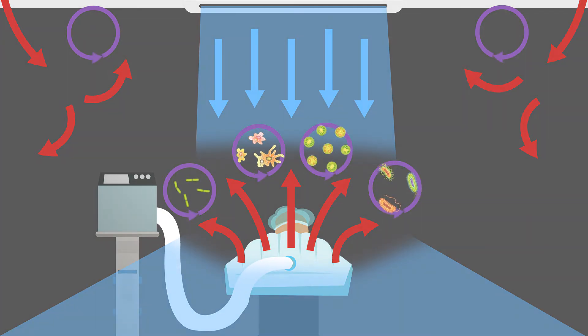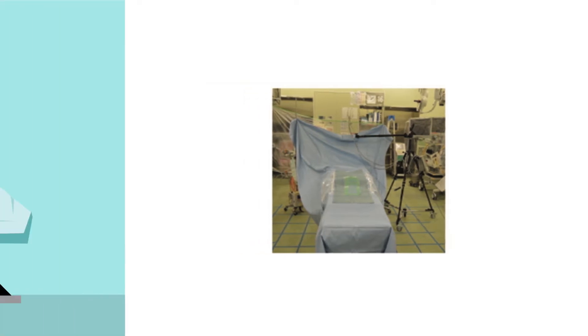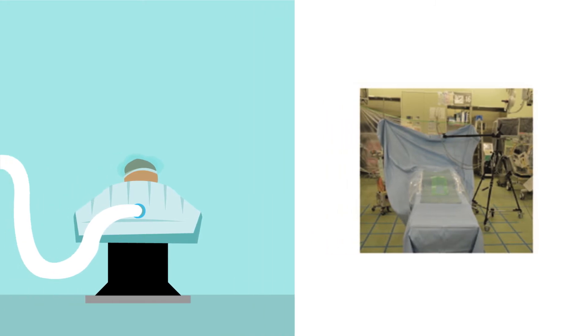To determine how forced air warming changes the airflow in the operating room, a mannequin was placed on an operating table and covered with a surgical drape. Either an upper body or lower body warming blanket was placed on the mannequin to mimic different types of surgery. These blankets inflate like a balloon when the attached heating device is turned on.